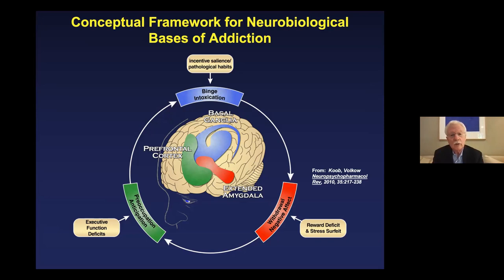From a neurobiological perspective, these stages overlap but are separated into different circuits. The binge intoxication stage involves the basal ganglia — a basic part of the brain we use for motivated behavior and seeking things in the environment necessary for living. The withdrawal negative affect stage, illustrated in red, is the extended amygdala, which incorporates the part of our brain involved in fear, stress, and avoiding dangerous situations. That's activated during withdrawal and negative affect.